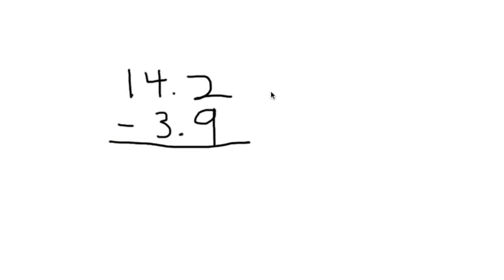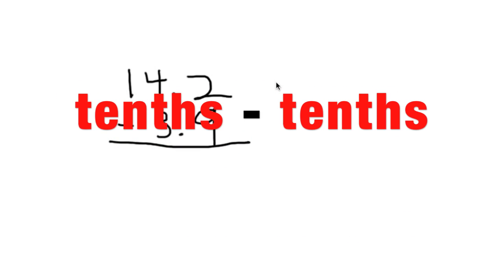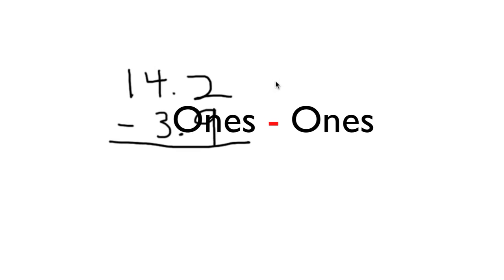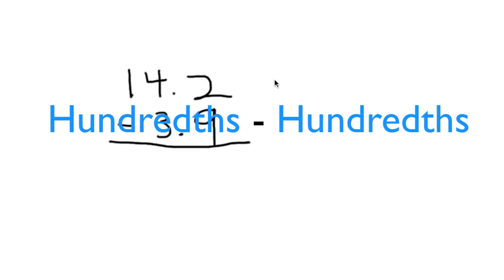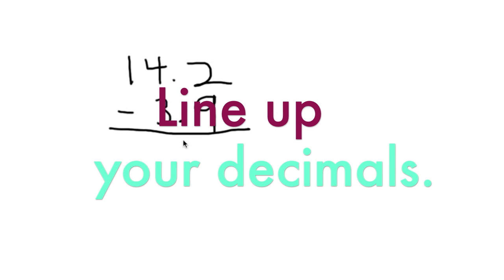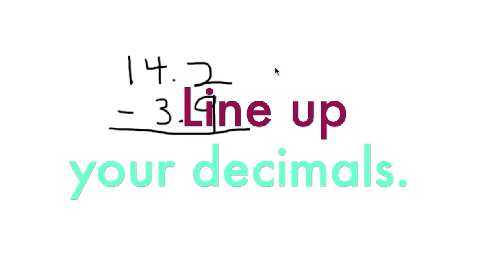You can only subtract like terms. Tenths from tenths, ones from ones, and hundreds from hundreds. An easy way to line up the terms is to line up your decimals.